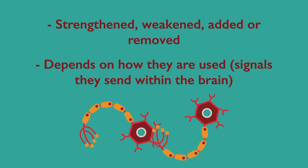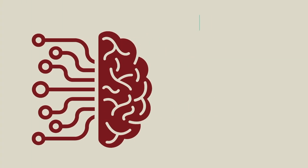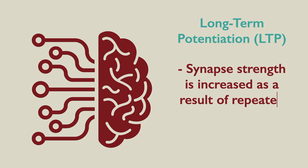A specific example of structural plasticity is the process of long-term potentiation. This is a process in which the strength of a synapse between neurons is increased in response to repeated or prolonged activation.